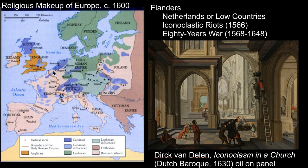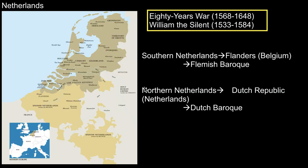He institutes policies of punishment, torture, and death of Protestants in the North, especially after the iconoclastic riots in 1566, when Protestants destroyed religious works of art, as you see in this painting. He directs his armies in a reign of terror, which begins the Eighty Years' War — the battle between Spain and the Netherlands for the independence of the Low Countries.